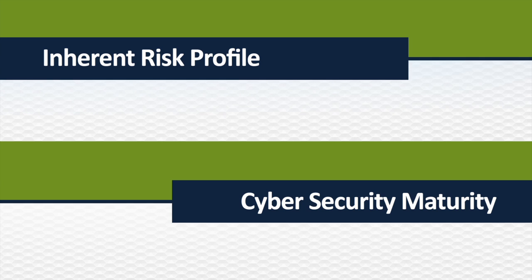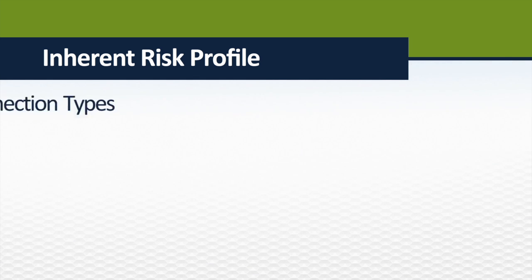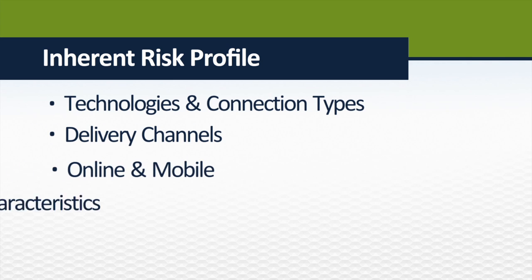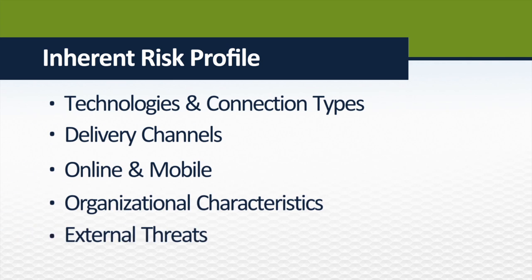Let's examine the inherent risk profile and cybersecurity maturity. Before implementing controls, credit unions must first assess and develop an inherent risk profile. The profile identifies activities, services, and products in the following domains.